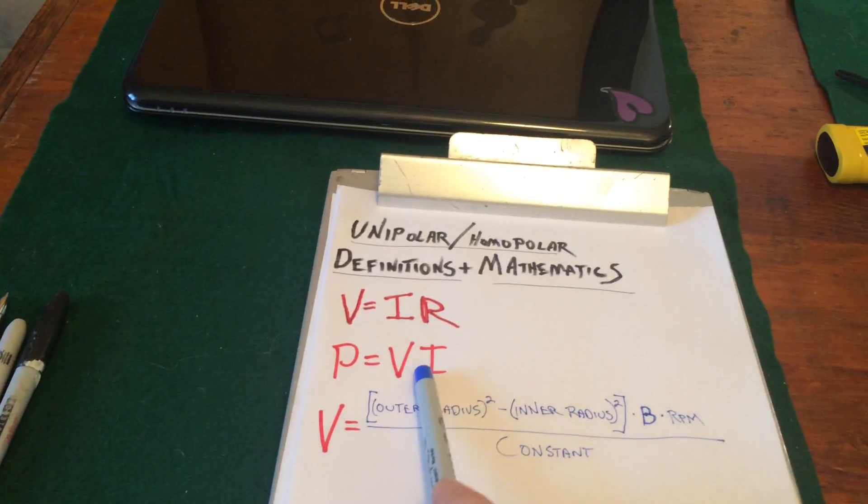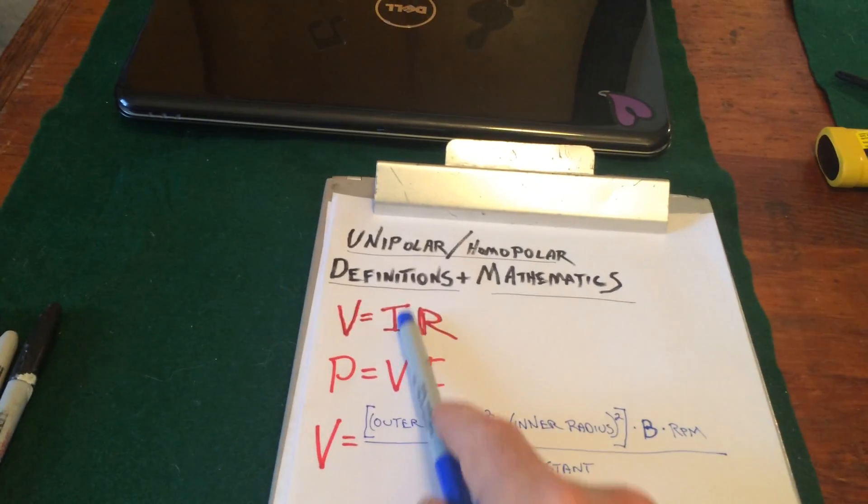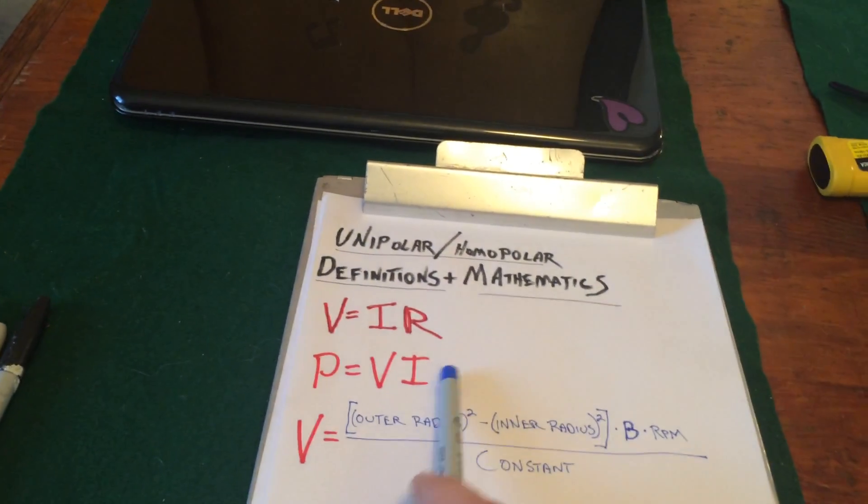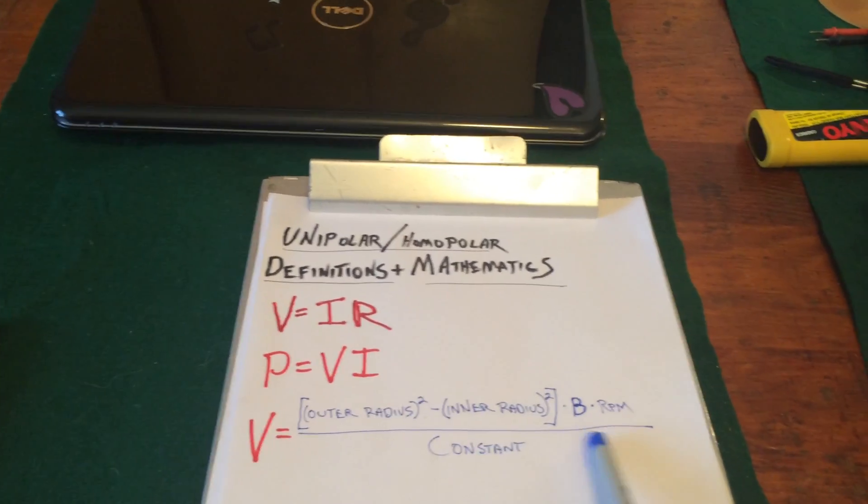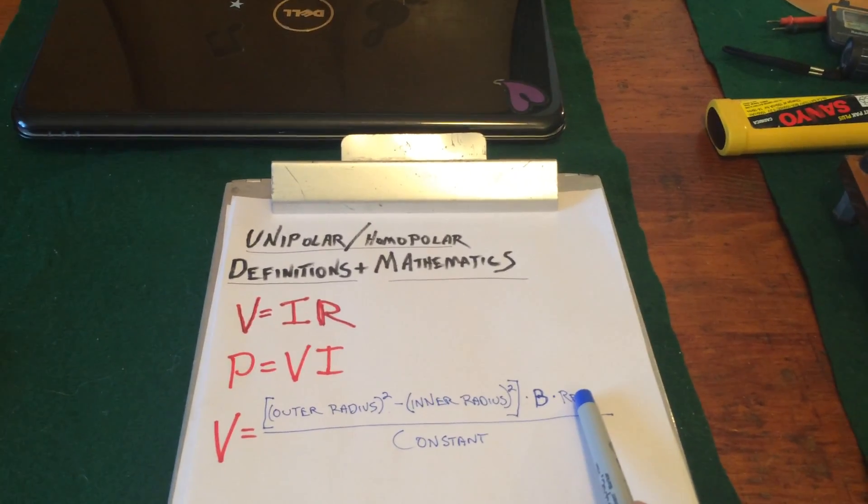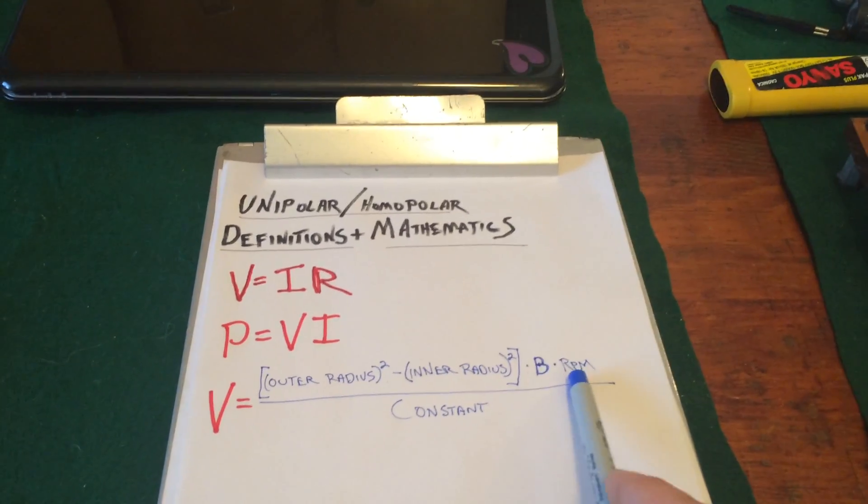Because the power is the voltage times the current, and since the current goes up when the voltage goes up, the power goes up with the square of the RPM. Okay, you following me?